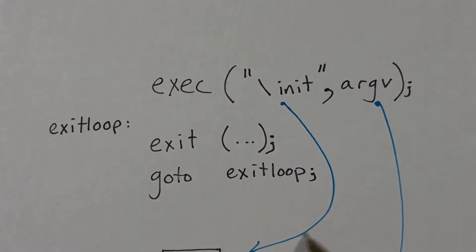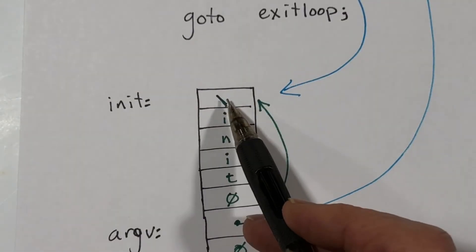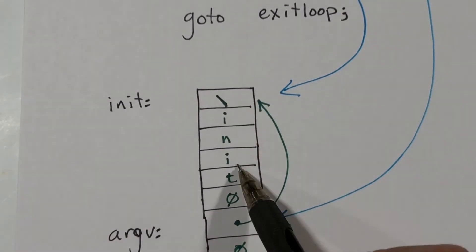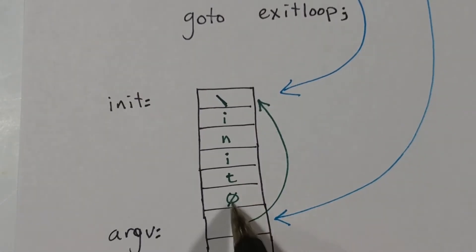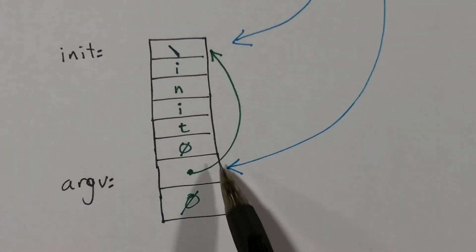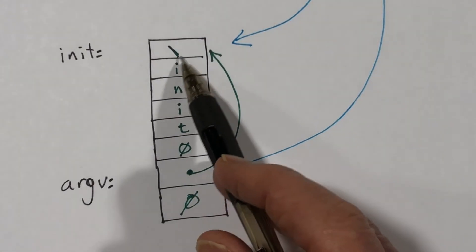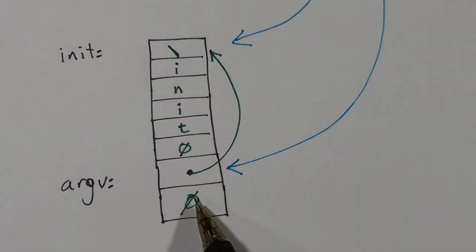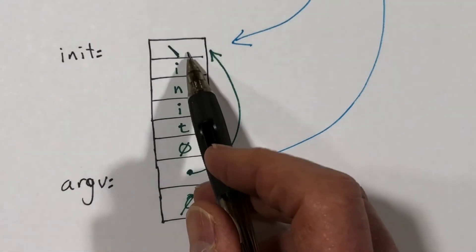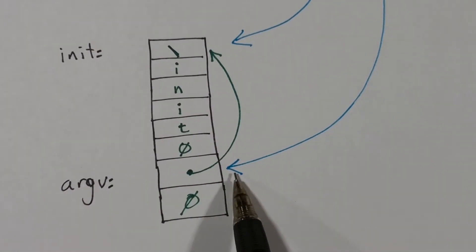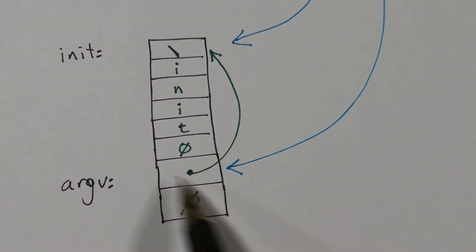This first argument is a pointer to a sequence of bytes, backslash i-n-i-t null byte, and argv is a pointer to an array of two elements. The first is a pointer to backslash init, and the second thing is the null, the terminating null. These are each one byte, and this is actually eight bytes, a double word, and it's not shown very clearly because they look like the same size here.